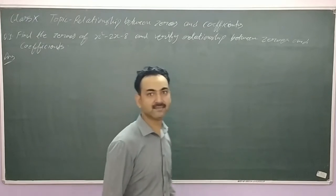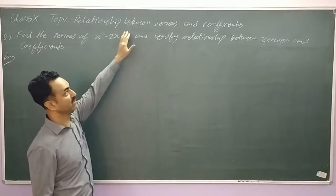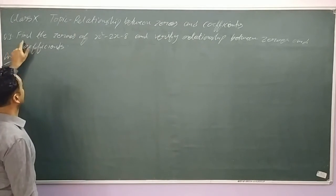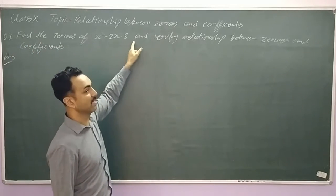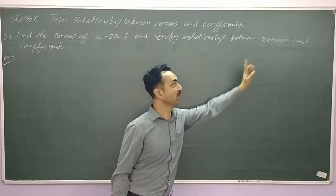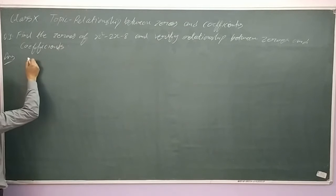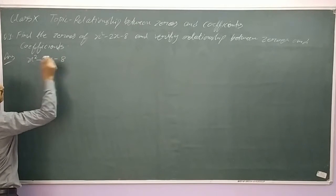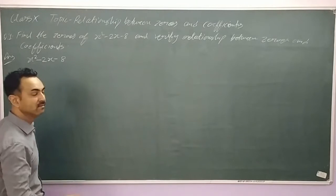Good morning students. Today we will discuss the relationship between zeros and coefficients. Let's understand with this question: find the zeros of x squared minus 2x minus 8 and verify the relationship between zeros and coefficients. First of all, we will find the zeros of this quadratic polynomial.